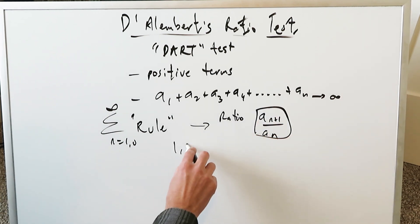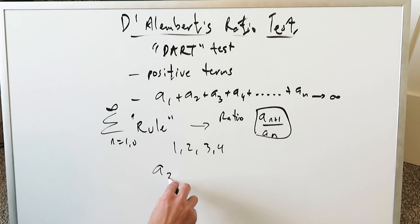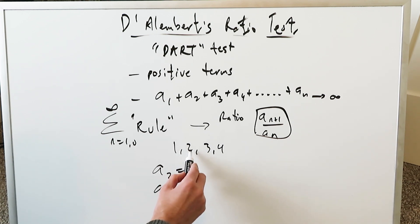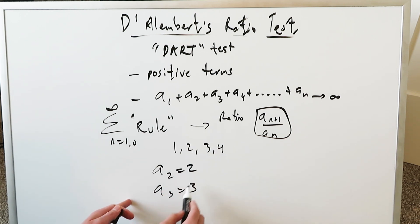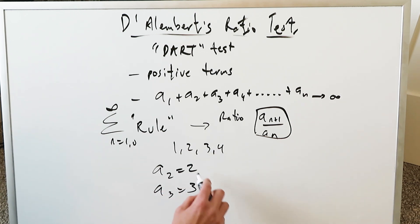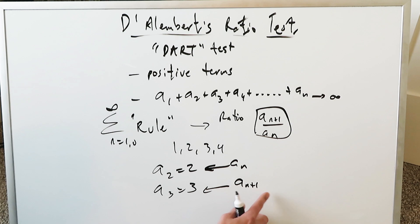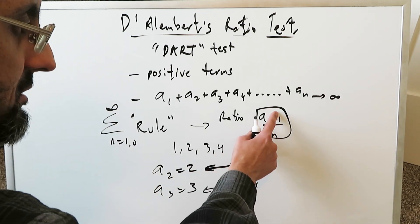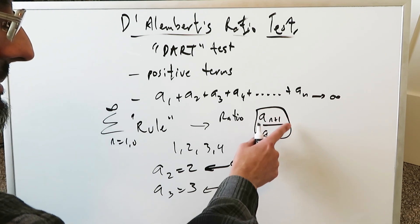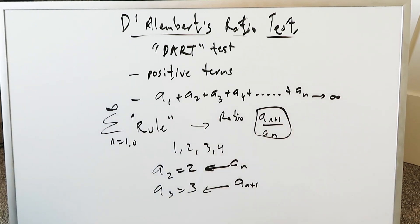Any item in that series, in terms of that specific point and the one right after it, you do a ratio between the two. For example, if I have a series 1, 2, 3, 4 — A2 is 2, A3 is 3. If I'm looking at this as an Nth term, then the next one is an A N+1 term, because it's one more than the one before it. That's a ratio of the succeeding term divided by the preceding term.